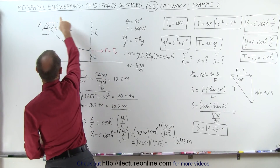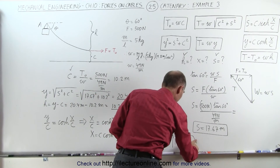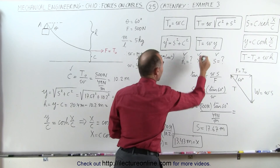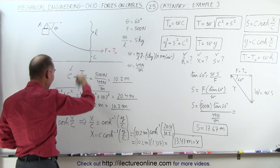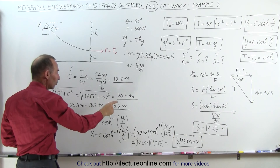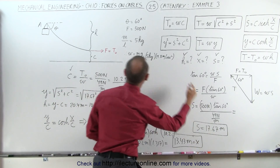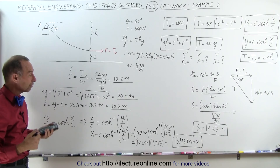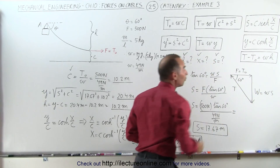So x = 13.43 meters, and note that s is a bigger number, which makes sense. To summarize all values: c = 10.2 m, h = 10.2 m — interestingly the same value. The total height from the lowest point to the attach point, y, is 20.4 meters. The cable length s = 17.67 meters, and the horizontal distance x = 13.43 meters. This required all the catenary equations plus the force-angle relationship.